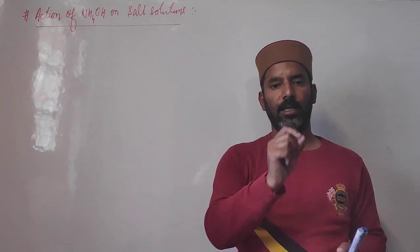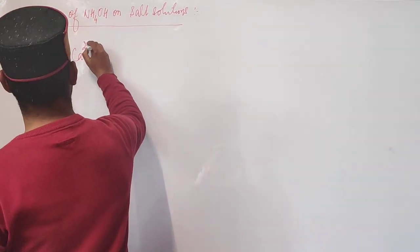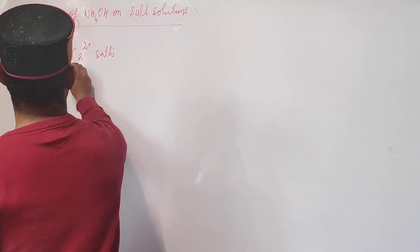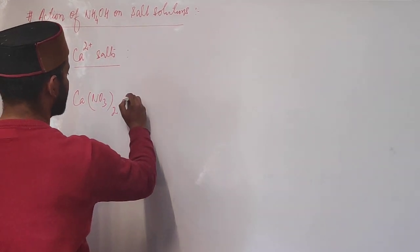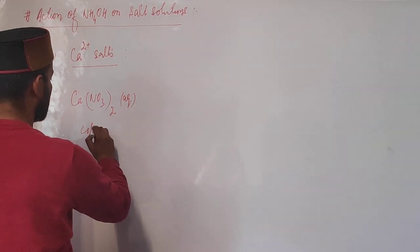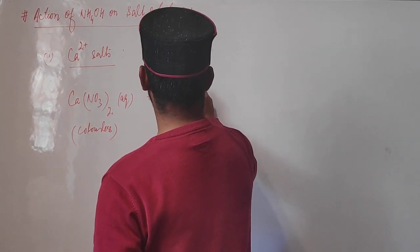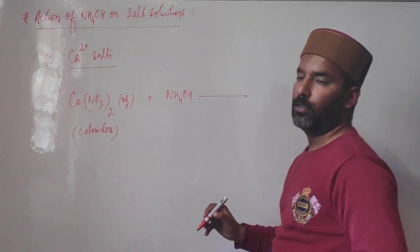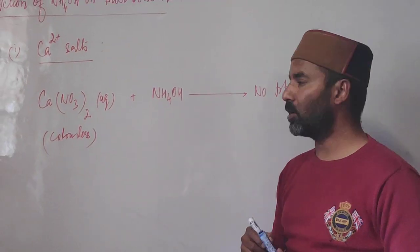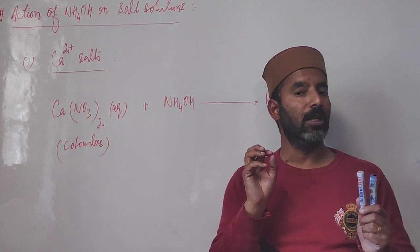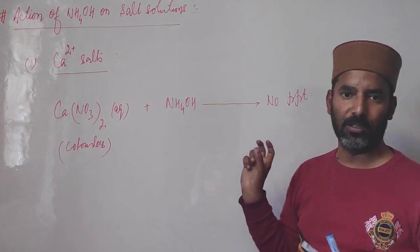First, we discuss the action of ammonium hydroxide on calcium salts. Take calcium nitrate — all nitrates are water soluble, so calcium nitrate dissolves in water to give a colorless solution. When we add ammonium hydroxide to it, we observe that there is no precipitation. This is very important: when sodium hydroxide is added to a calcium salt there is a white precipitate, but ammonium hydroxide produces no precipitation.